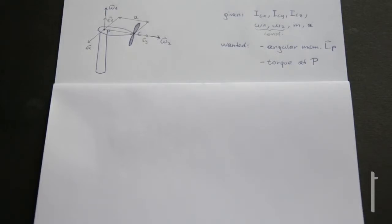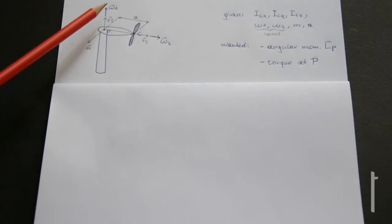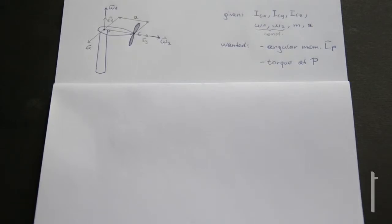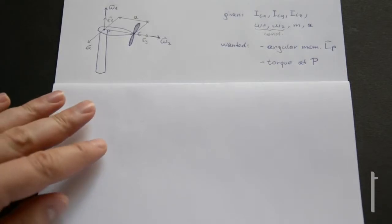This is a rotating frame of reference — the entire coordinate system rotates with angular velocity omega 1. To find LP, we start by finding the angular momentum concerning the center of mass at point C. This equals LC = IC times omega absolute.